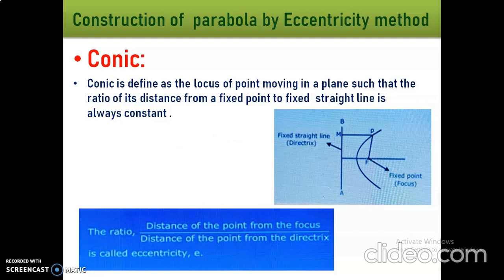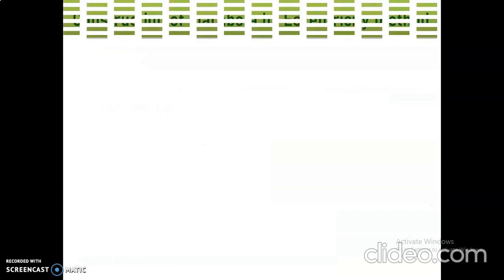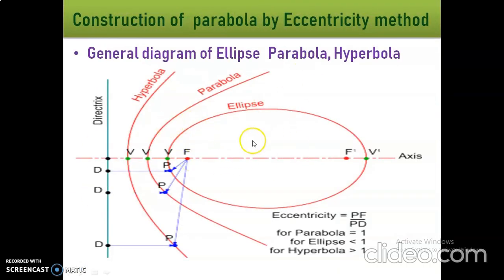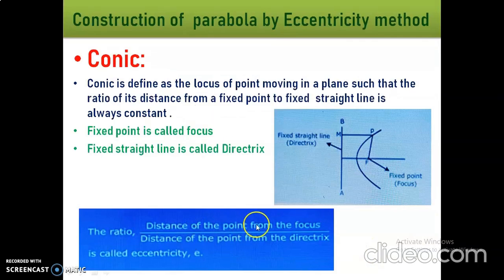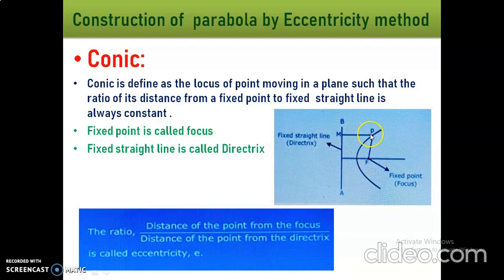Next, the general diagram of ellipse, parabola, and hyperbola. This is the general diagram of the ellipse and this is the general diagram of the parabola. The eccentricity: for parabola e = 1, for ellipse e < 1, for hyperbola e > 1. Eccentricity is the ratio of distance from the focus point to distance from the directrix line.